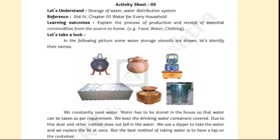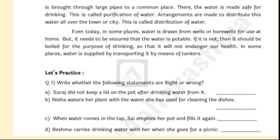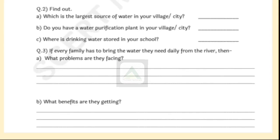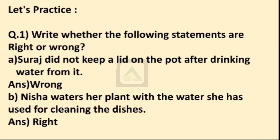Today we will see activity sheet number 5, for the chapter 'Work for Water for Every Household.' Today we will see what are the processes and essential commodities for the source of water at a home. This is how the worksheet will be. So let's start the activity sheet.